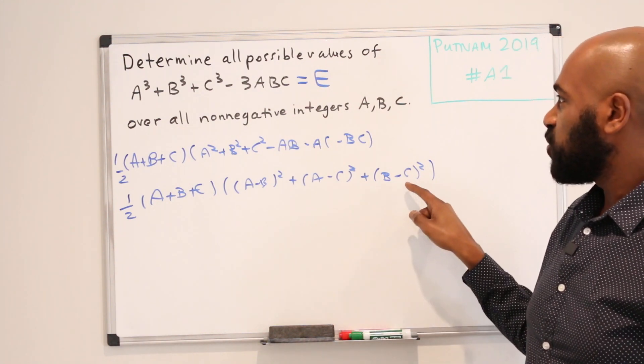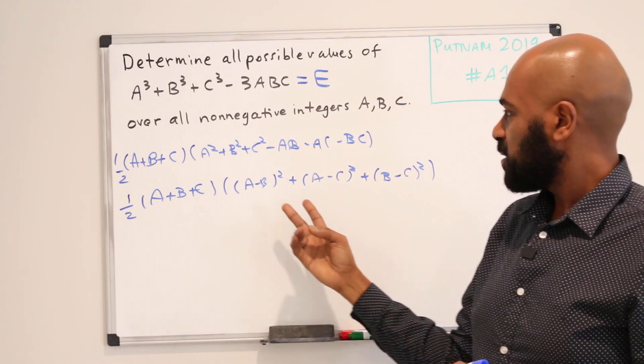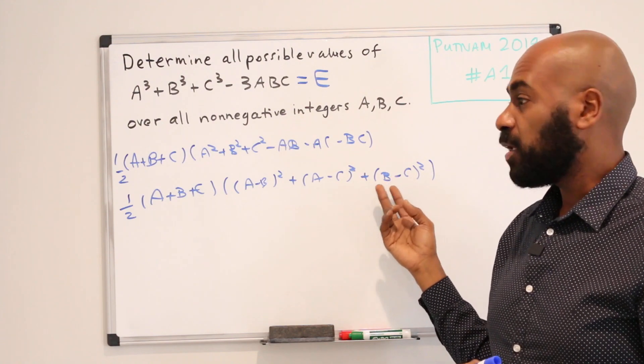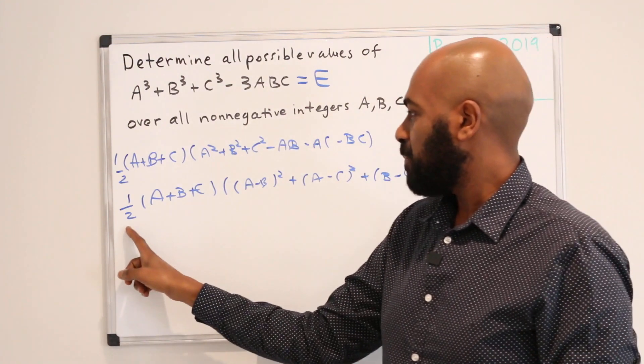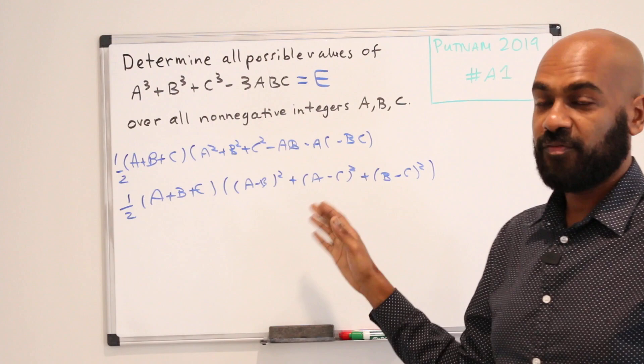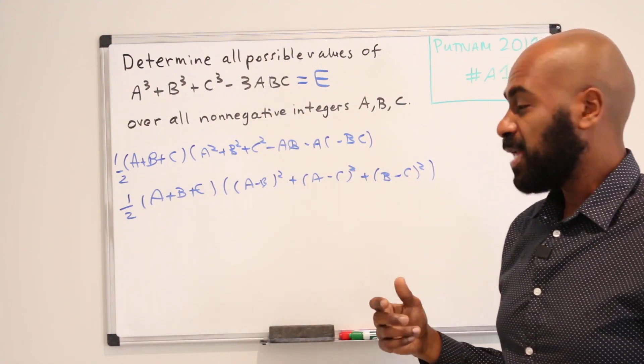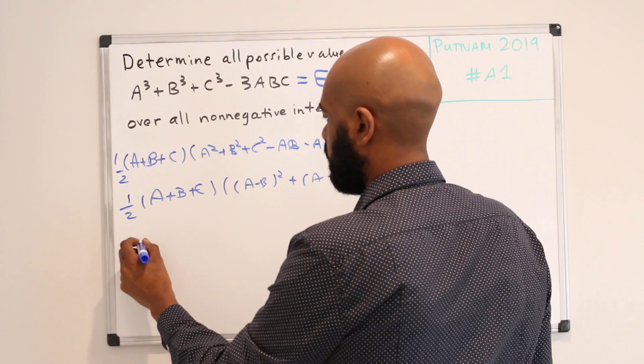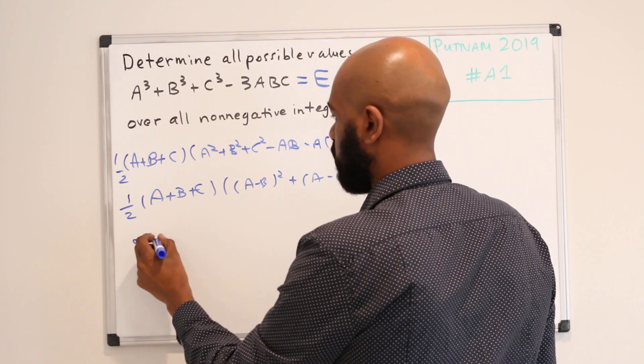One of the advantages though of this expression is now if we make (A - B), (A - C), and (B - C) small integers that we know, and divide by this half, we can get an expression for E that will illuminate what possible values E can take on. So let's do that by actually picking concrete values.